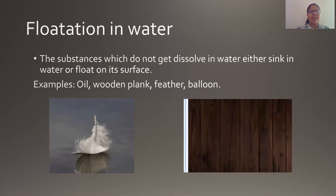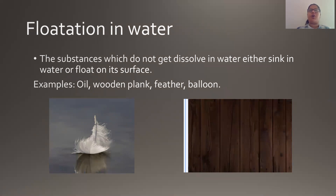Moving further, we can differentiate materials based on their property of flotation in water. Now what is flotation in water? Some substances do not get dissolved in water, and either the substance floats on the surface — remaining on the top layer of the water — or sometimes it sinks at the bottom of the jar or glass.